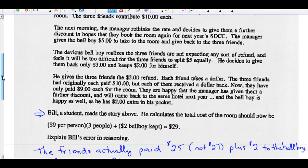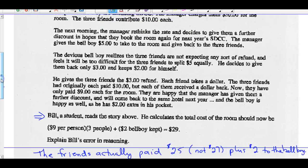So Bill's error in reasoning. The friends actually paid $25, not $27 for the room. Plus they paid $2 for the bellboy. All right. So the manager charged them $25. That's a fact. Manager charged them $25, not $27, like Bill says.